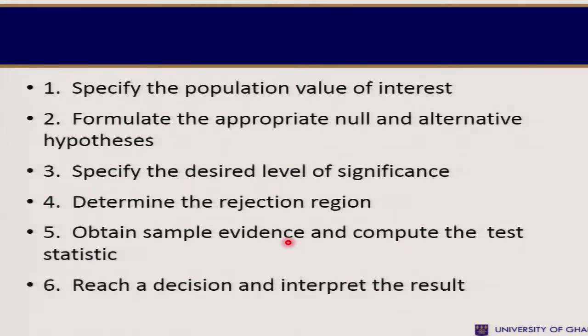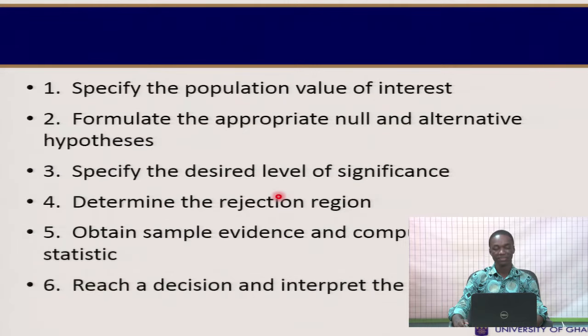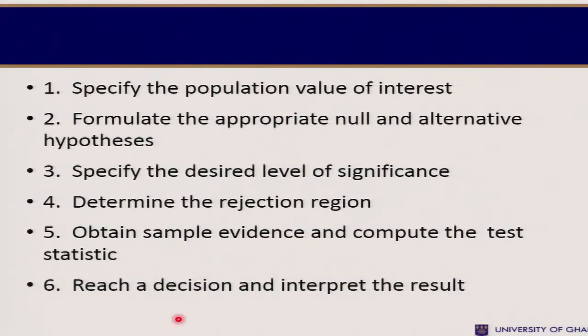These are the steps in formulating and testing a hypothesis: first, specify the population value of interest; second, formulate the null and alternate hypothesis; third, specify the desired level of significance (common ones are 1%, 5%, or 10%); fourth, determine the rejection region; fifth, obtain the evidence by computing the test statistic; and finally, reach a decision and interpret results, thereby concluding.